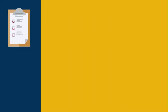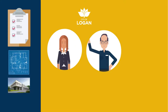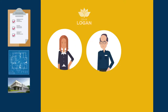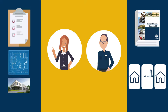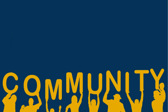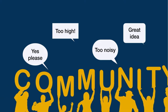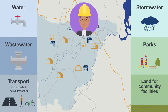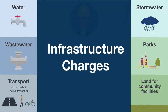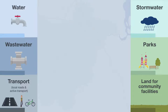When you lodge a development application with us, it's given to our town planners and engineers to assess. They make sure the proposal meets the requirements of the planning scheme and that it fits in with the neighbourhood. Sometimes community consultation is required and this feedback is included in the assessment. In other instances, we may also ask the developer to pay infrastructure charges. These charges help council manage the increased load on the networks from the development.